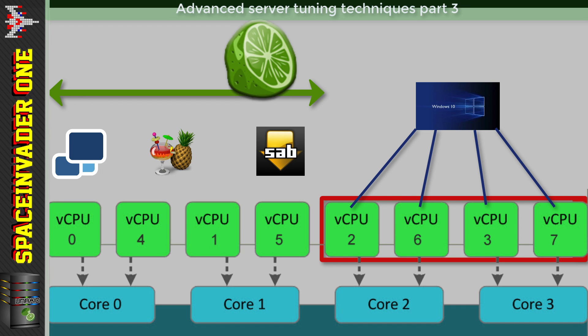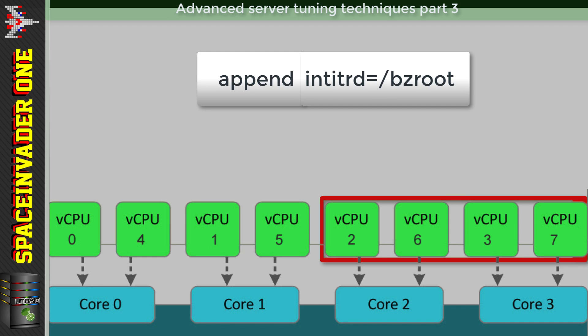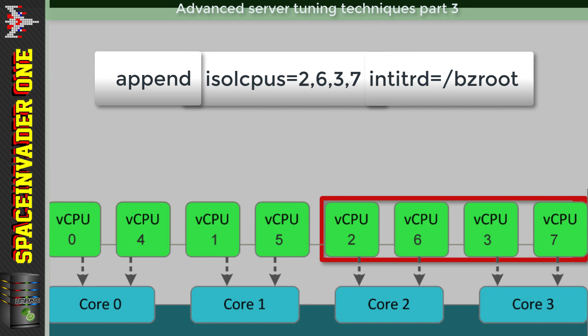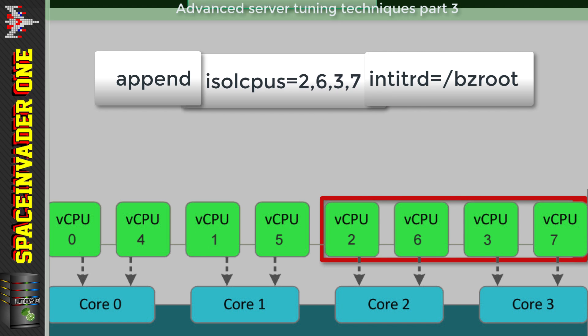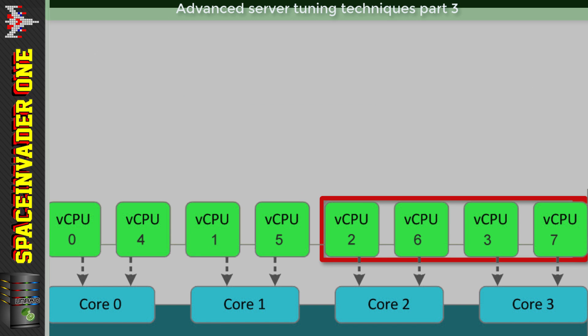To isolate CPUs, look at the CPUs you want to isolate - in this case 2, 6, 3, and 7. We need to make a change in our syslinux configuration file. Find the line with append and initrd, and between those two we add the following: isolcpus=2,6,3,7. Another way to write those numbers is in ranges: 2-3,6-7.